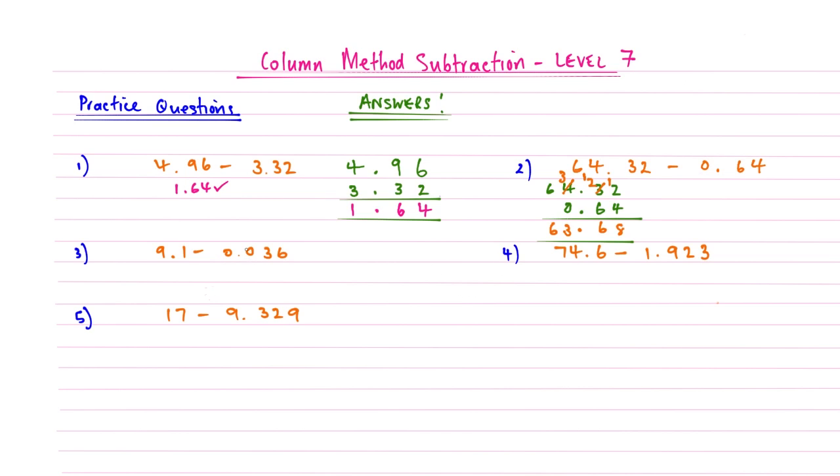Question number 3. We have 9.1 subtract 0.036. So again, line up our columns, and this is the longer one. So 0.036. We need something to take these away from, so we're just going to add some zeros above there. So hopefully this is making sense. So 0 subtract 6, we can't do, so we're going to set up the chain of borrowing. So that reduces to a 0, carry the 1. That reduces to a 9, carry the 1.